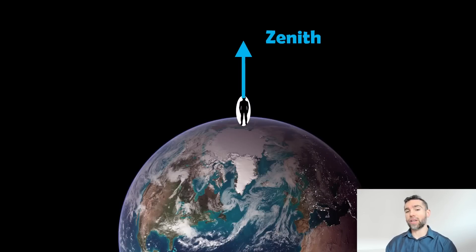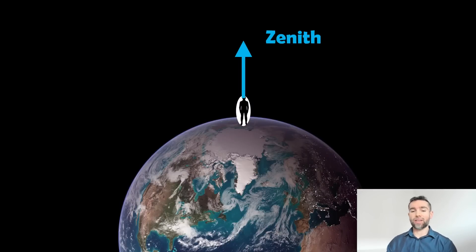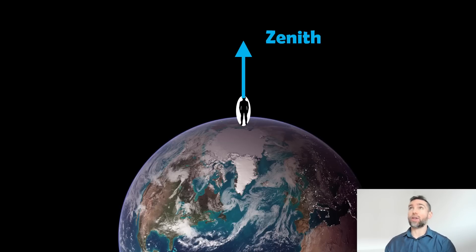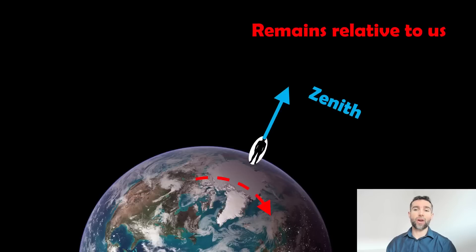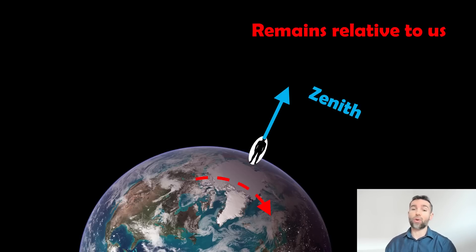To start looking at the meridian, we're going to assume that we're on the earth somewhere, and the zenith is directly above us. No matter what time it is or where we are, directly above us at 90 degrees altitude is going to be the zenith. As the earth rotates, that stays relative to us — it's our local reference point. The zenith is always directly above us no matter what.